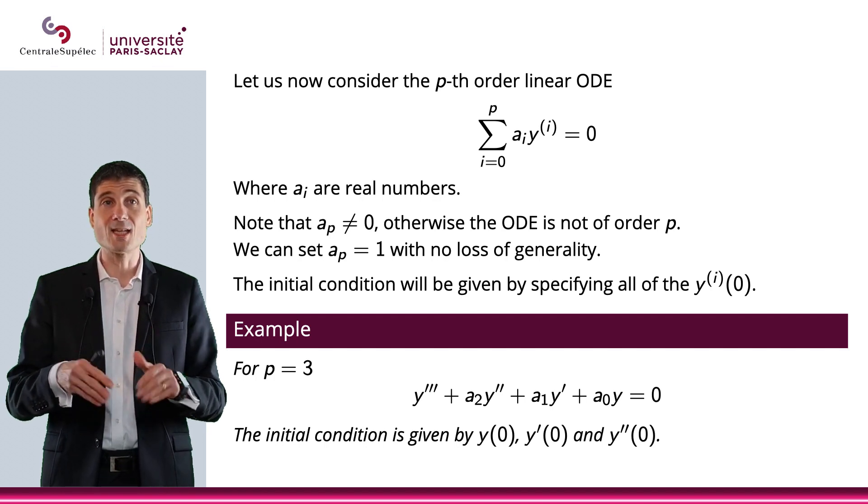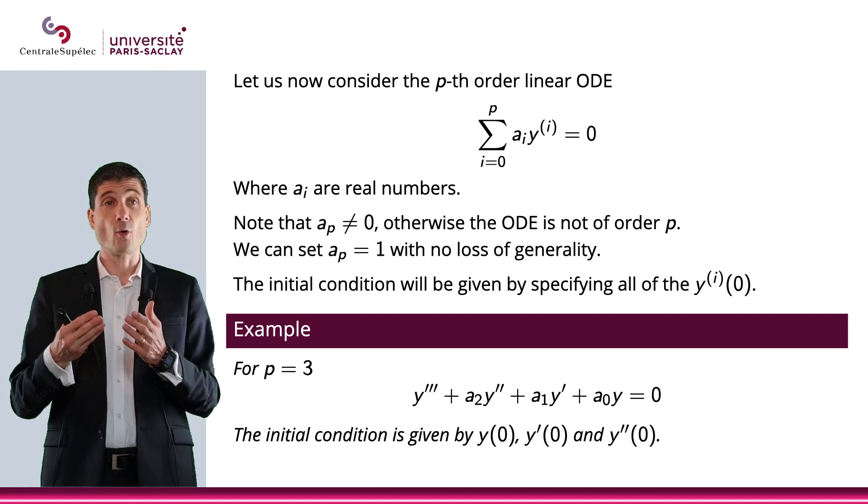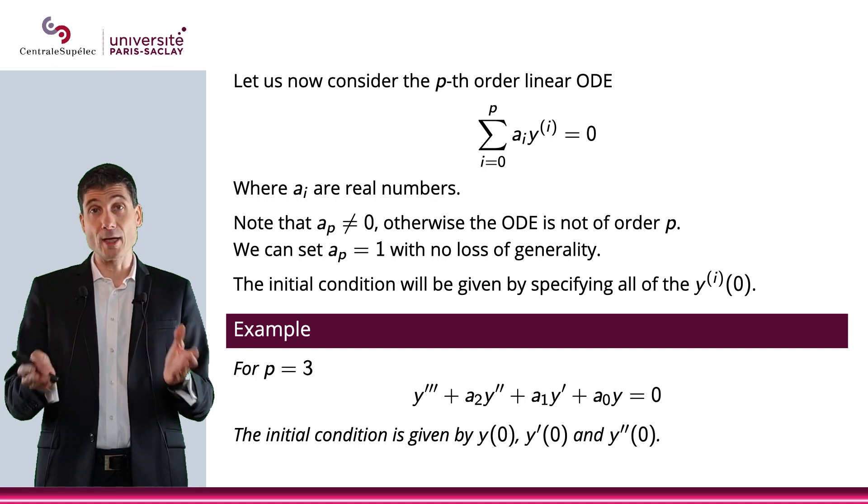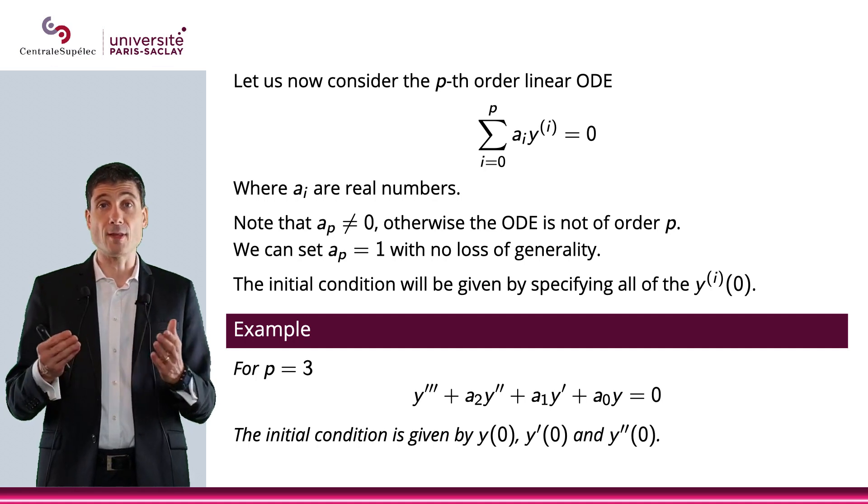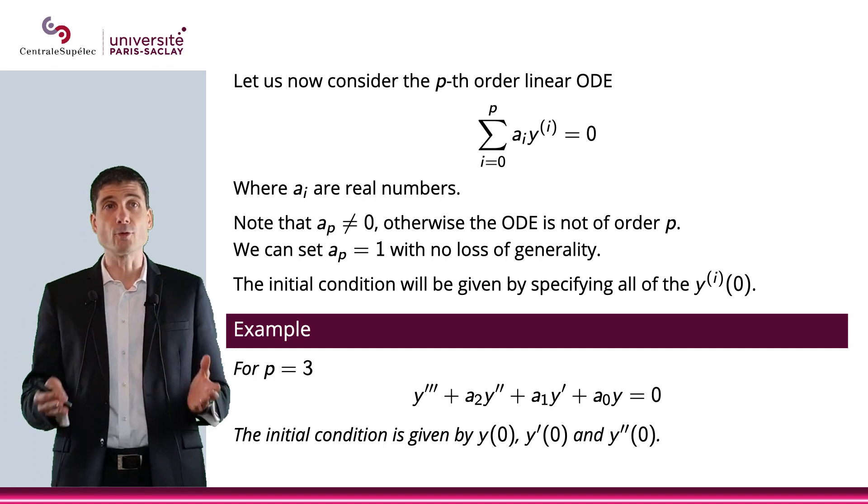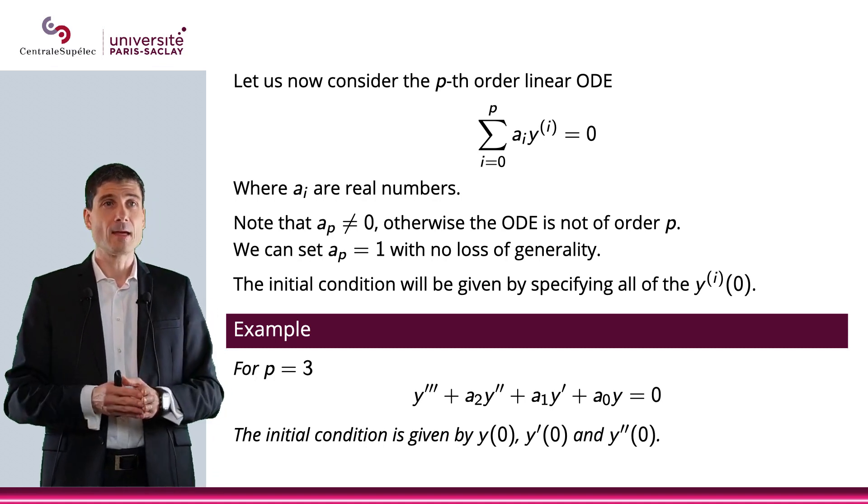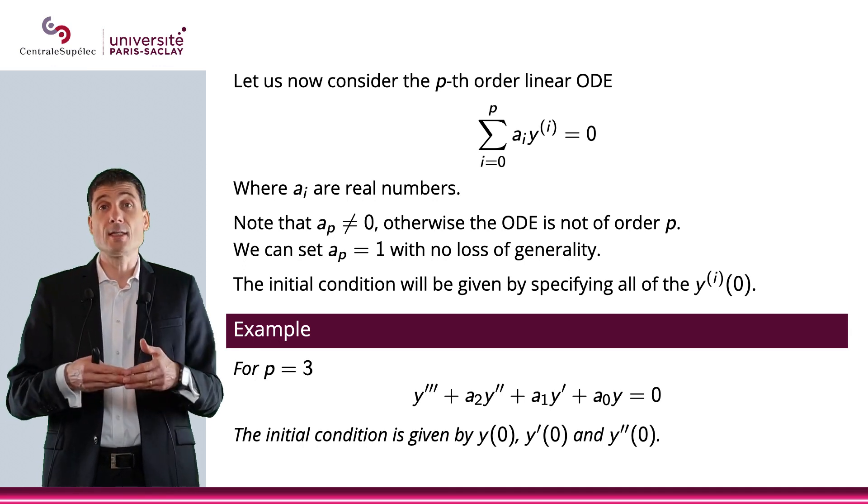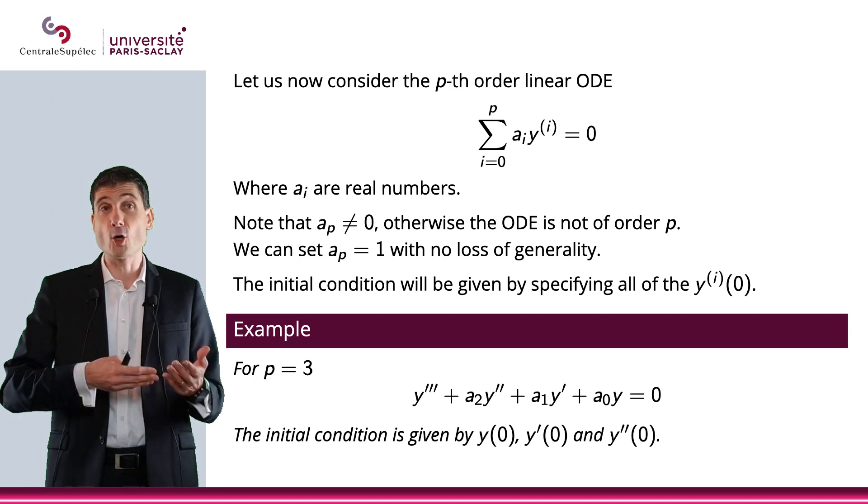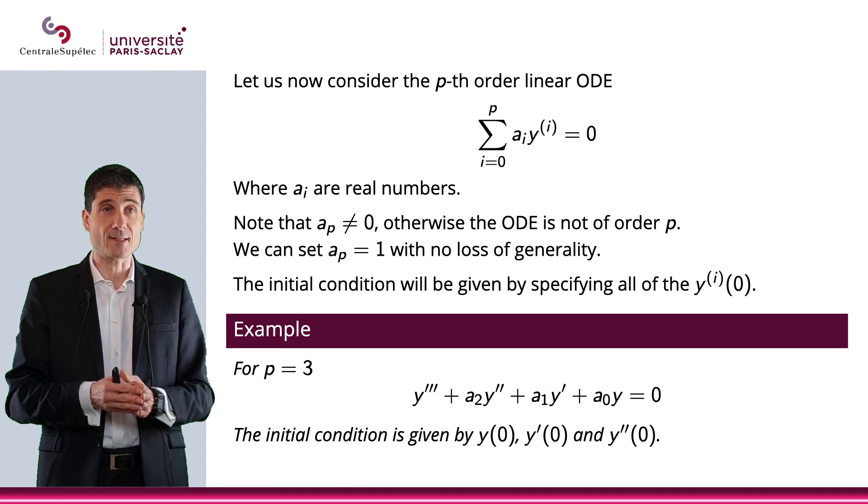Of course when I do the 0th derivative of y, that is simply the function y. Now I will consider a_i to be real numbers. For a_p, it has to be not equal to 0, otherwise the ODE is not of order p. Now I could decide to set a_p equal to 1 because I can divide all the coefficients by a_p, and in this case just simplify this thing.